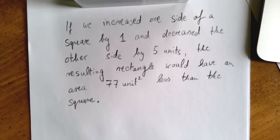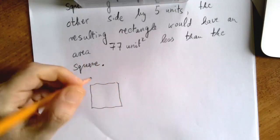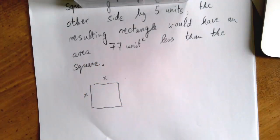So we have a word problem here. If we call the original square side x, then we should be able to come up with what happens after the changes.